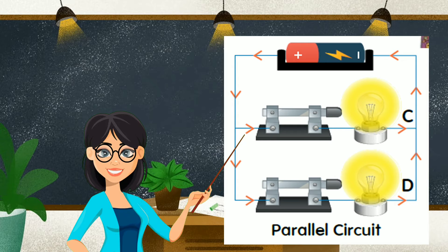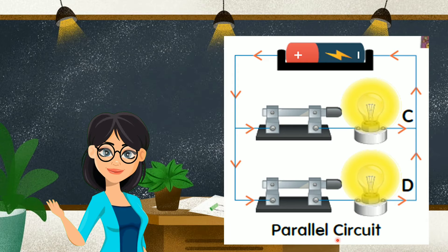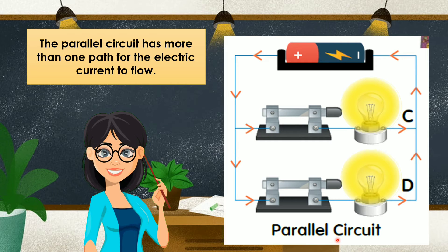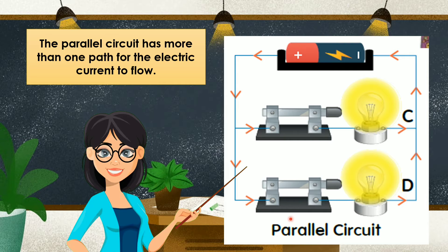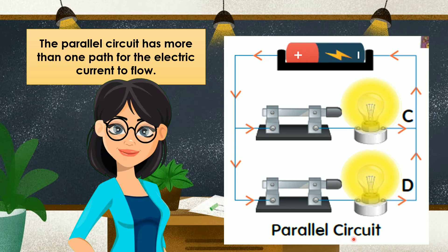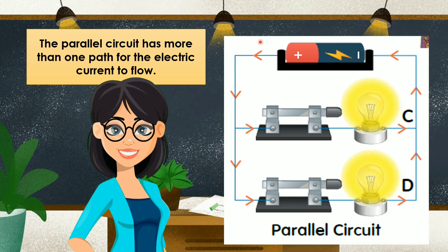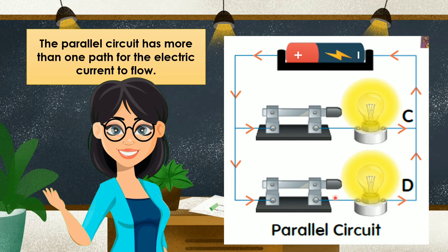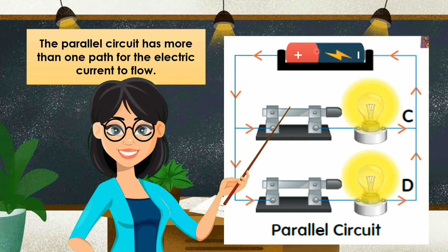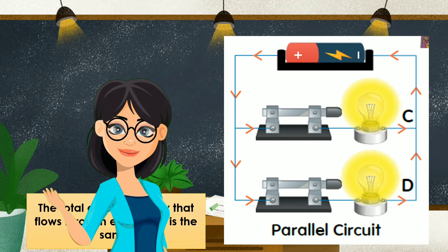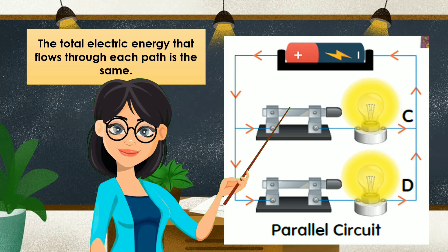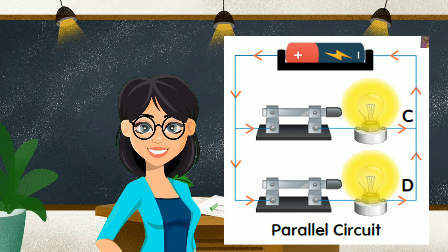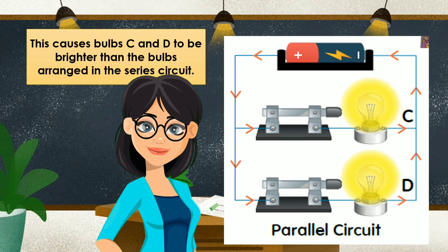Now, let us see the brightness of the bulb in the parallel circuit. The parallel circuit has more than one path for the electric current to flow because the parallel circuit has different branches — a first branch and a second branch for the electric current to flow. The total electric energy that flows through each part is the same. This causes bulb C and D to be brighter than the bulbs arranged in the series circuit.